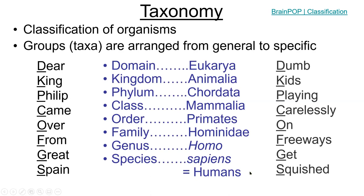If you wanted to classify humans, the classification starts with D for domain — which domain we are in is Eukarya — K for kingdom, we are in the animal kingdom. And you just get more and more specific in these categories as you work your way down the list until you get to species, which is the most specific of the taxa.